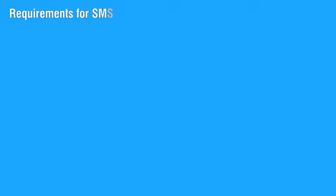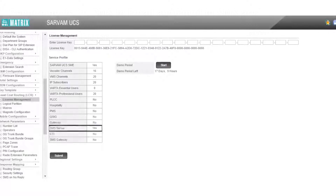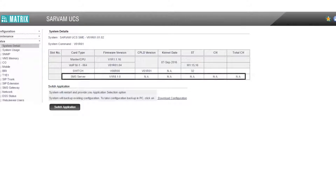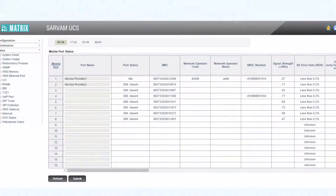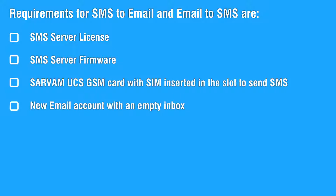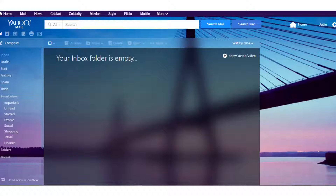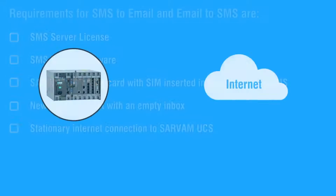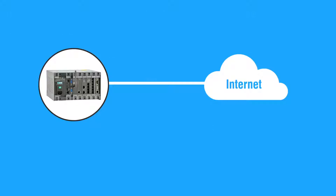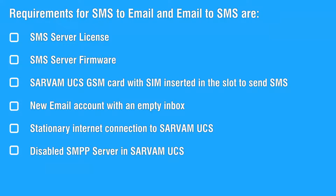Requirements for SMS to email and email to SMS are: an SMS server license, SMS server firmware, Servum UCS GSM card with SIM inserted in the slot to send SMS, a new email account with an empty inbox, a stationary internet connection to Servum UCS, and a disabled SMPP server in Servum UCS.